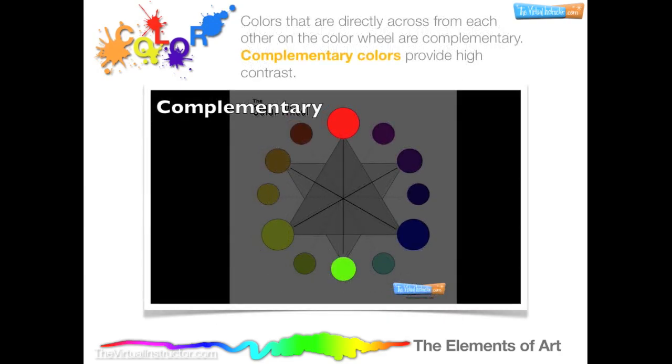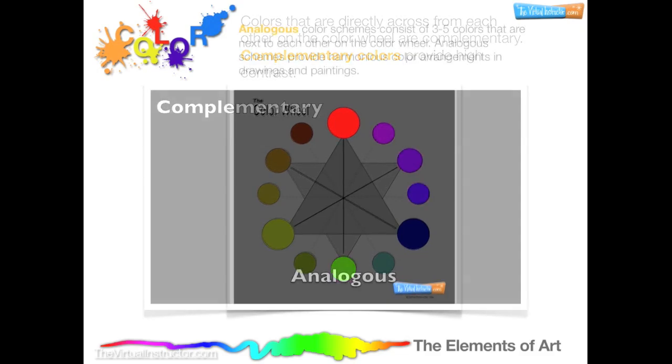Colors that are directly across from each other on the color wheel are complementary. Complementary colors provide high contrast. For example, red and green, orange and blue, and yellow and violet are all examples of complementary colors.